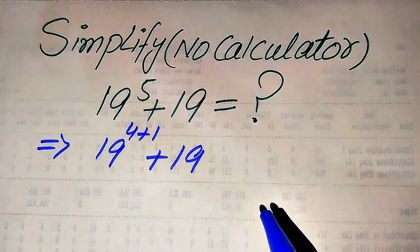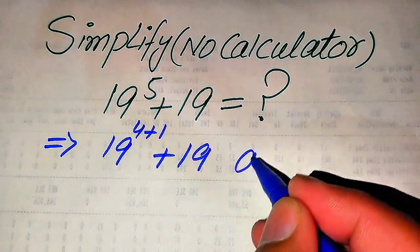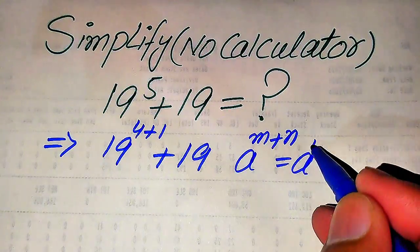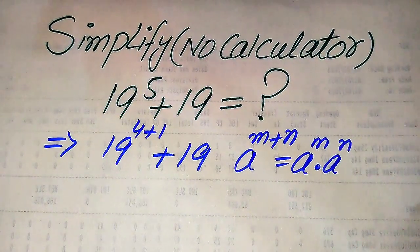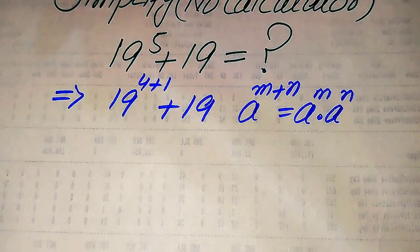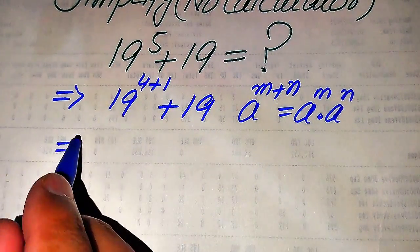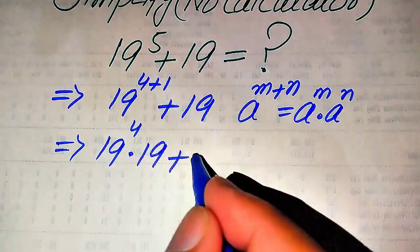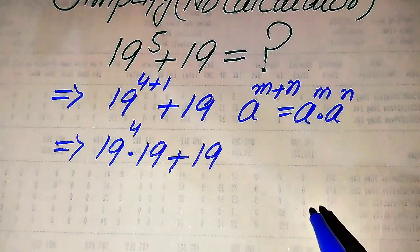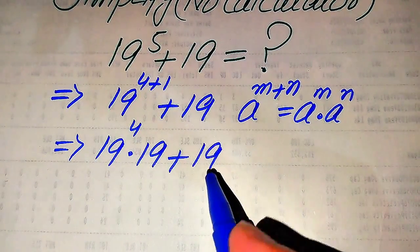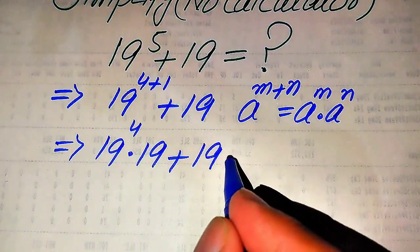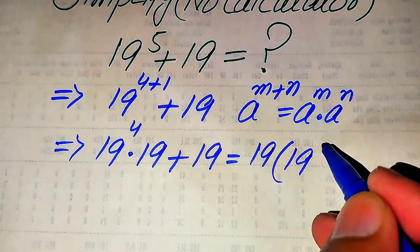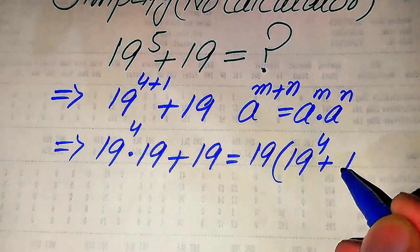In the next step we use the exponent law: a to the power of m plus n equals a to the power of m multiplied by a to the power of n. According to this law we break the exponent and write it as 19 to the power of 4 multiplied by 19, plus 19. Then we take common factor 19 from both terms, giving us 19 times of 19 to the power of 4 plus 1.